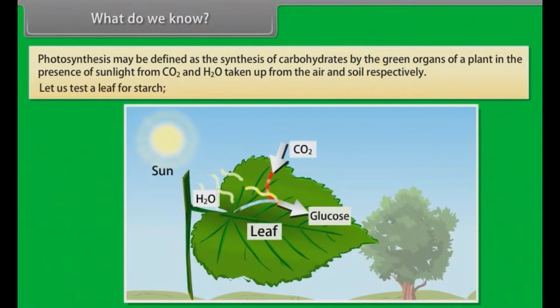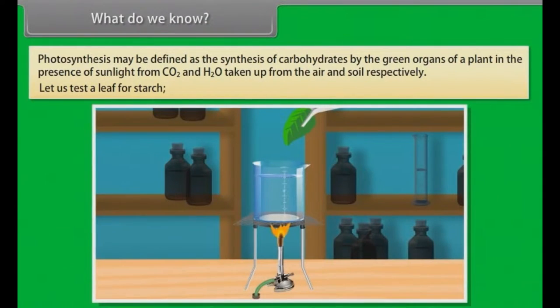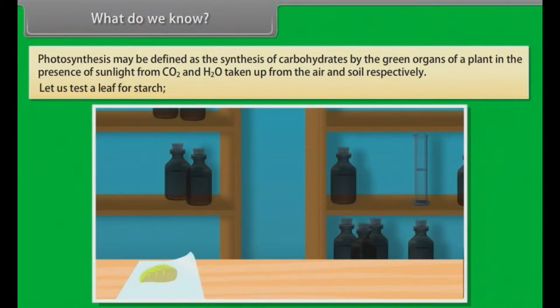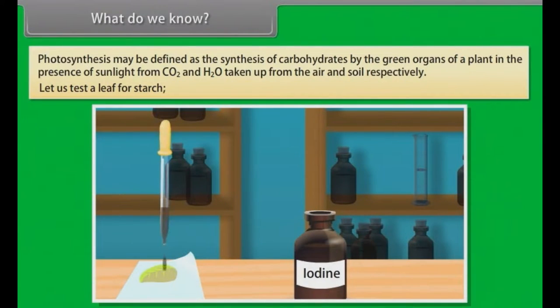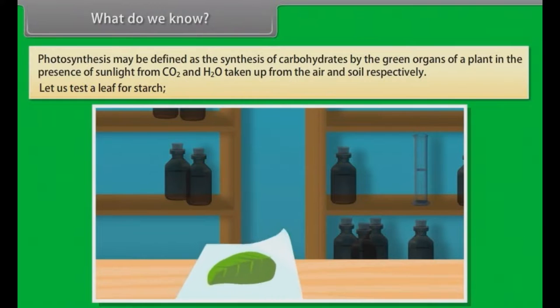Let us test a leaf for starch. Remove a green leaf from a plant. Use forceps to place the leaf in boiling water. Boil for 2 minutes. After that, place the boiled leaf in a boiling tube containing 90% ethanol. Now place the boiling test tube in hot water until the leaf decolorizes. Remove the leaf and wash it with cold tap water. Now spread the leaf on a white surface. Add a few drops of iodine solution on the leaf and it turns dark blue color, which indicates the presence of starch and proves that photosynthesis occurs.